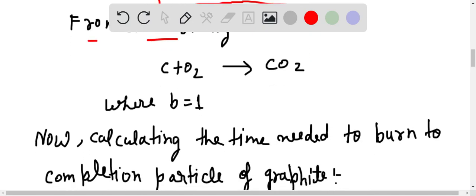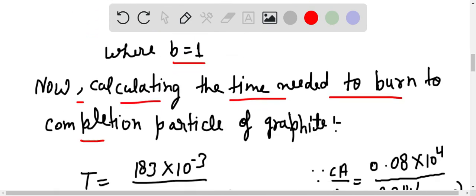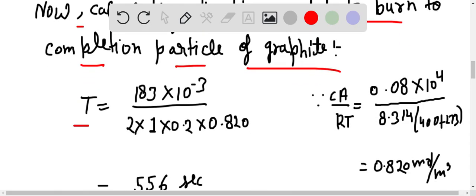C plus O2 which gives CO2, where b equal to 1. Now calculating the time needed to burn to completion particle of graphite, so here T equal to 183 multiplied by 10 to the power minus 3 divided...